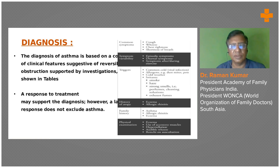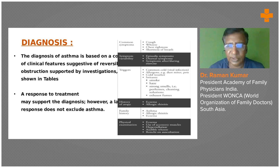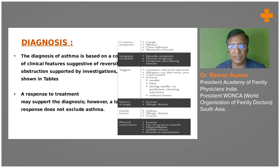Family history is very important because allergies run in families. If one child has asthma or their parents have asthma, the children are also likely to develop it. Family history of asthma, allergic rhinitis, and eczema is important. On physical examination, be mindful of audible wheeze — the whistling sound — and bronchi on auscultation during clinical evaluation. Most of these things can and should be done clinically in day-to-day practice.